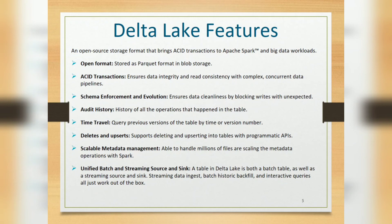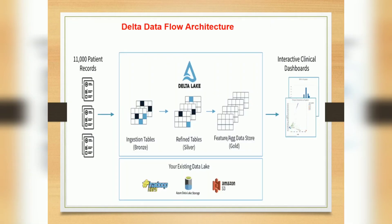Before looking at examples, let's understand the data flow architecture. You have different source systems, you process the data, and finally deliver it to the reporting team. Data is stored in existing data lakes — Azure Data Lake Storage, Blob storage, or Amazon S3. The processing happens in three stages: ingestion layer (Bronze), refined layer (Silver), and aggregated data store (Gold layer).